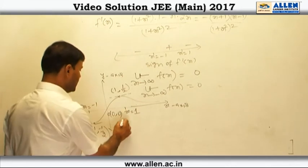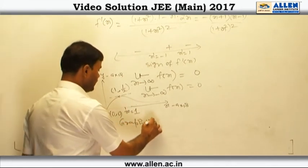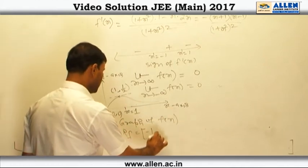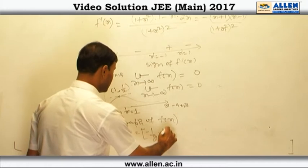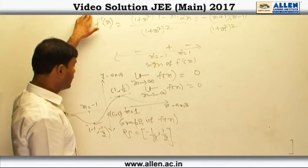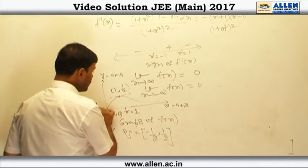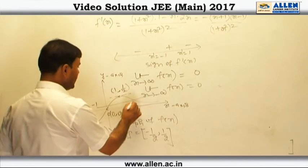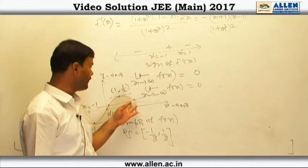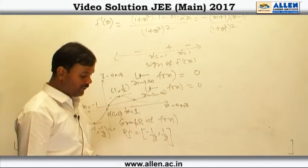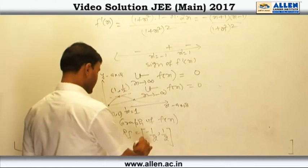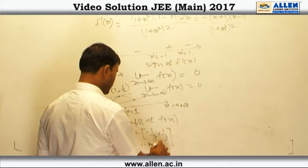From the graph of f(x), the range of this function equals the closed interval [-½, ½], which is exactly our given co-domain. So the function is surjective. However, when we draw a line parallel to the x-axis, it cuts the graph at more than one point, so the function is not injective. Therefore the function is surjective but not injective, and answer 4 is correct.